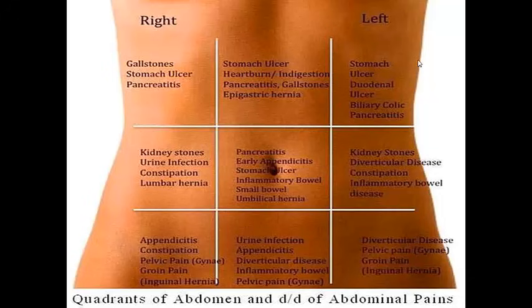The left hypochondriac region presents with stomach ulcers and duodenal ulcers because part of the stomach is here, as well as biliary colic and pancreatitis because the tail of the pancreas is present in this region.